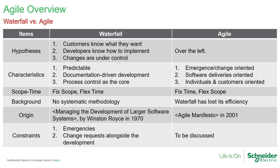This is also a comparison between the waterfall model and the Agile model. Normally for the waterfall model, customers know what they want, the developers know how to implement, and the changes are under control. We continue the project mainly based on the original plan, because the development activities are predictable, and we manage these activities mainly by documentation and process control.